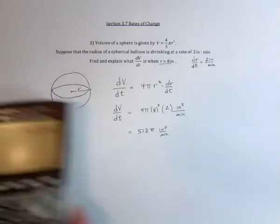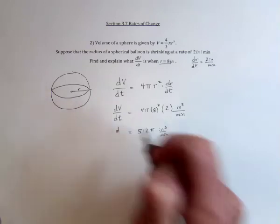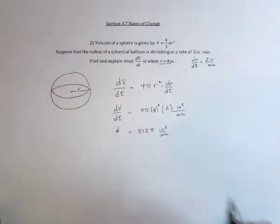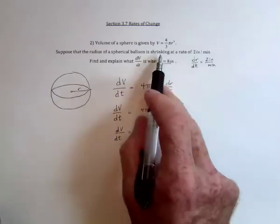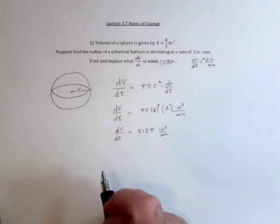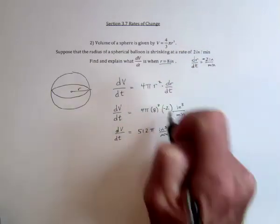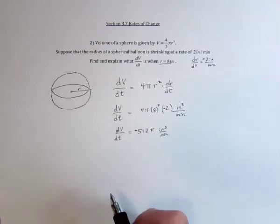So that's how fast the volume is decreasing, so I should have put a negative 2, or in other words, the volume is getting smaller by 512π cubic inches per minute.